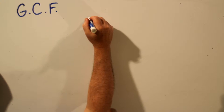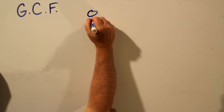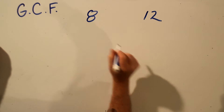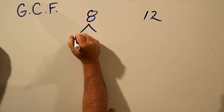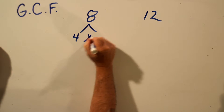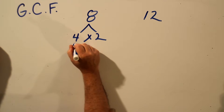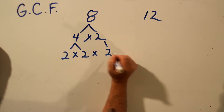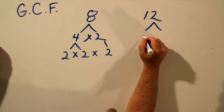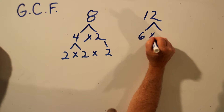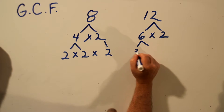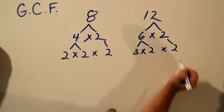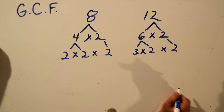Let's try another example. Find the greatest common factor for 8 and 12. We'll find the prime factors for each number. 8 can be factored as 4 times 2, and 4 can be factored as 2 times 2, and 2 is prime, so we'll bring that down. 12 can be factored as 6 times 2, and 6 is 3 times 2, and 2 is prime, so we'll bring that down. So there are our prime factors for both lists.